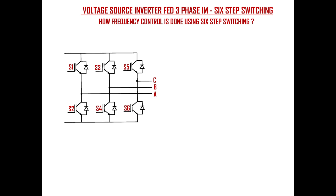Let's consider a three-phase voltage source inverter consisting of six IGBT switches as shown here, which will be connected to a three-phase induction motor. For simplicity, I have not shown the induction motor here. The inverter can also be made up of six thyristor switches, but keep in mind that if you are using thyristor switches, then you need to have a separate commutation circuit to turn off the thyristors — that is, to reverse bias the thyristors in the inverter. The input is both DC voltages center-tapped as shown here.